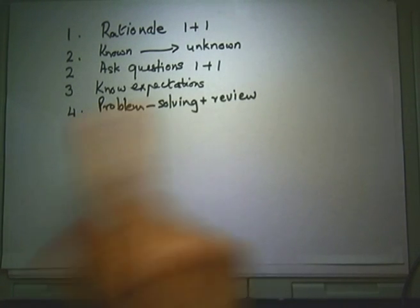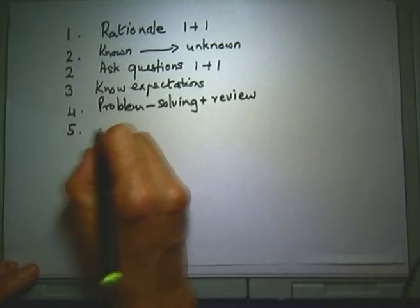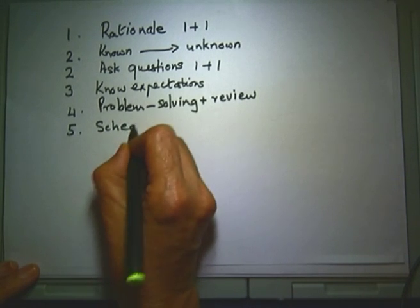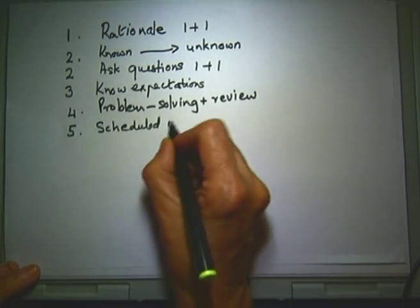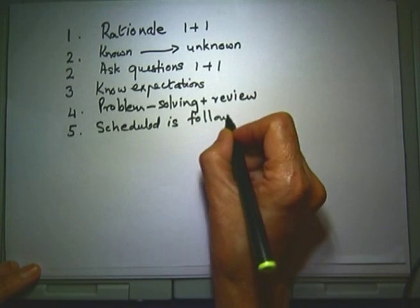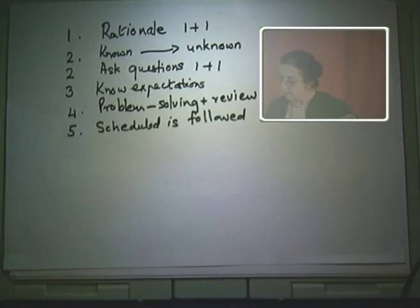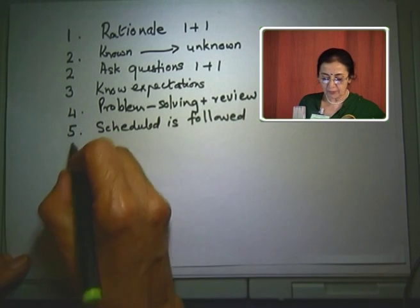Additional groups add further points: rationale was the first item identified, and another group selects point G — that a certain schedule is established and followed.